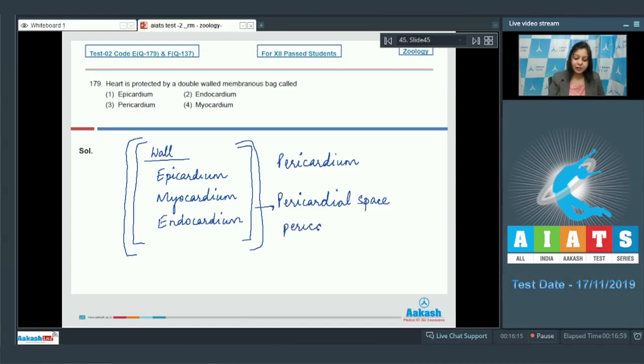This pericardial fluid acts as a shock absorber. So the double walled membranous bag is pericardium. The correct answer becomes option number three. Let us see the next question.